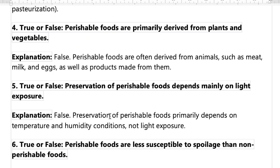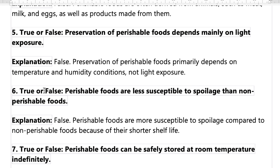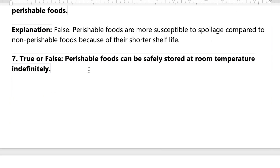Number five: preservation of perishable food depends mainly on light exposure. That's false — it also depends on temperature and humidity, not only light exposure. Number six: perishable food are less susceptible to spoilage than non-perishable food. That's false — it's more susceptible, not less. Foods that are easy to perish will be easier to get spoiled.